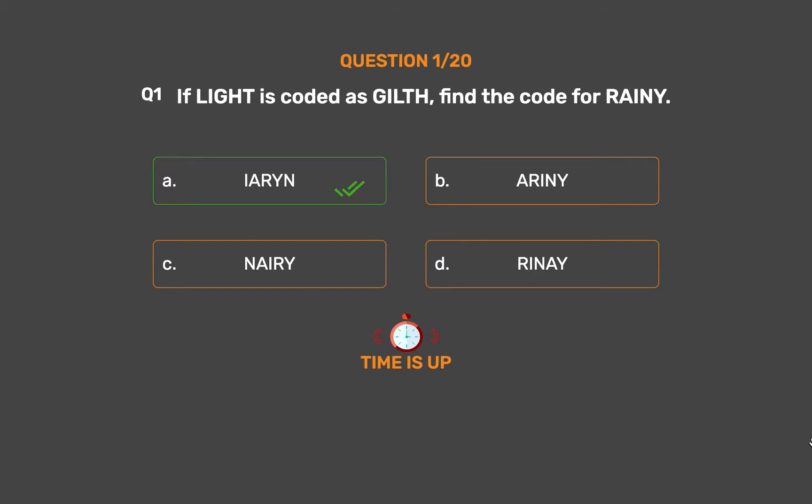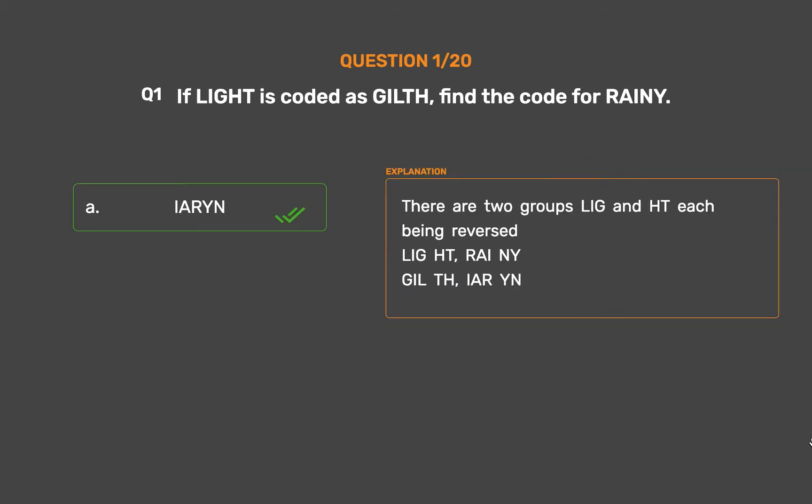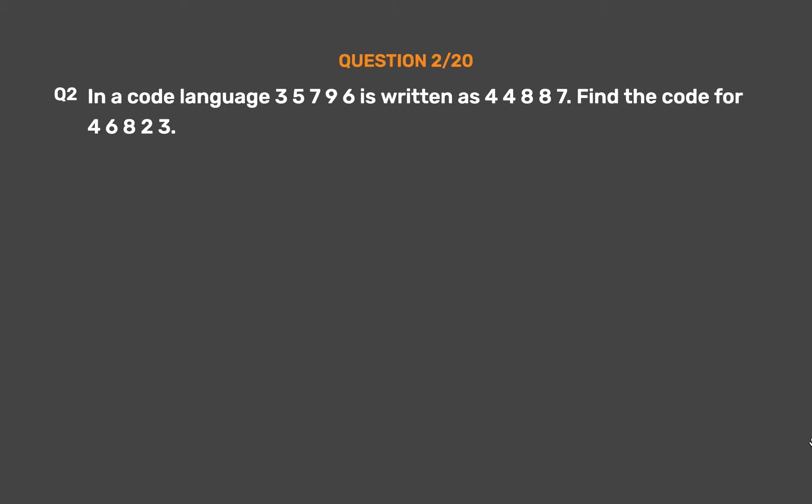The correct answer is Option A: iron. There are two groups — 'lig' and 'ht' — each being reversed: lig → gli, ht → th. Similarly 'rainy' is split into 'rai' and 'ny', reversed to give 'iron'.